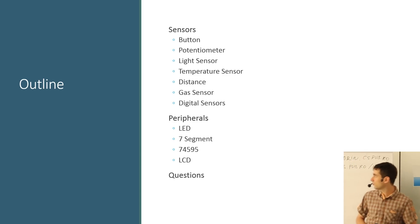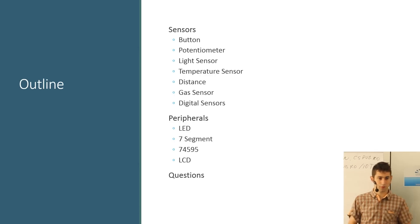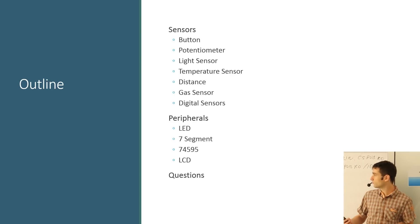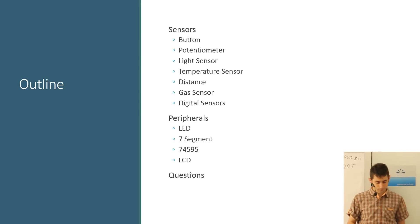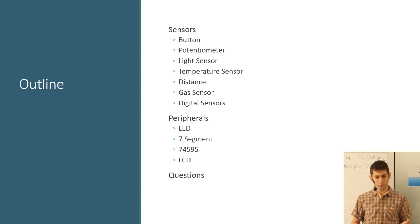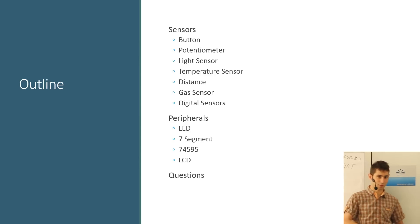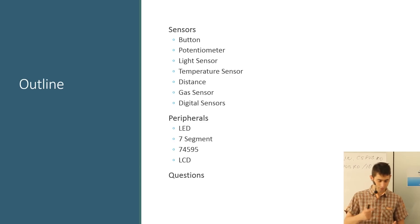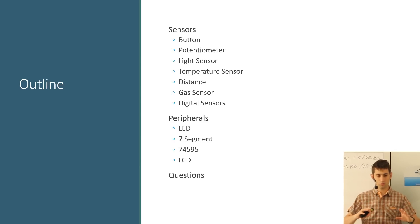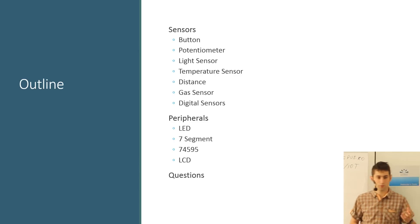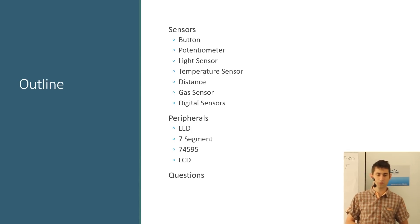Let's start with the outline for today. First, we're going to talk about the sensors we have in the kit - buttons, potentiometers, gas sensors, and so on. We'll make it more clear about the temperature sensor we used yesterday and why we had to do some formulas. Then we'll go on to peripherals: screens, LEDs, and so forth, and a short discussion about signal processing. Please feel free to ask questions.